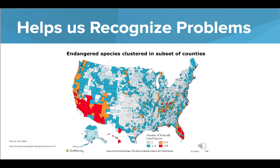Data visualization is incredibly useful because it helps us recognize problems. Here's a visualization that displays the amount of endangered species across the United States. Your eyes are almost instantly drawn to the two locations with the highest amount of endangered species. Do you see them? You can see that Florida and the bottom left of the U.S. contain the most endangered species. This is helpful because now we know that programs to save these species should probably focus in those areas.